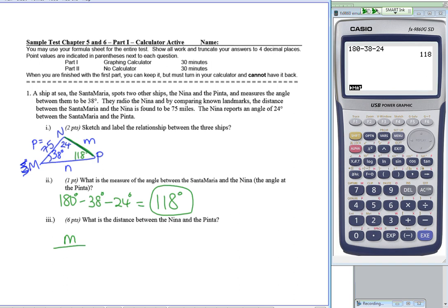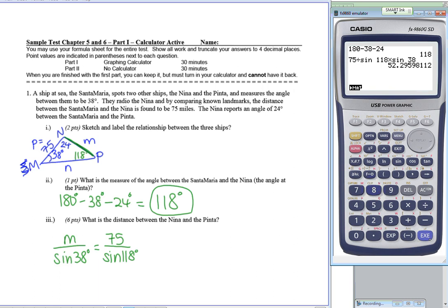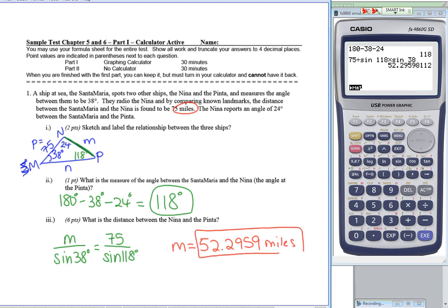I put side M on top over sine of 38, then use the known pair: little p is 75 over sine of angle P, which is sine of 118. Solving on the calculator: 75 divided by sine of 118, then multiply by sine of 38, gives 52.2959 miles. The degree symbol is the unit for the angle measure.